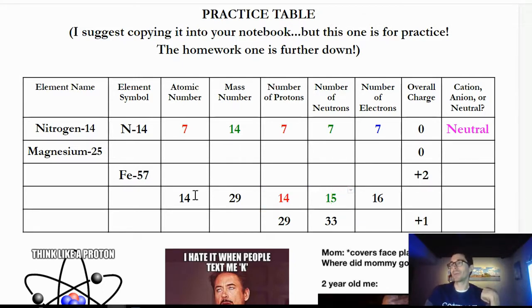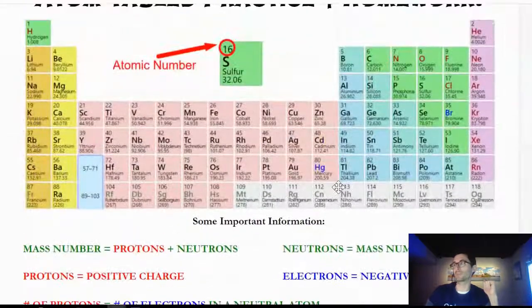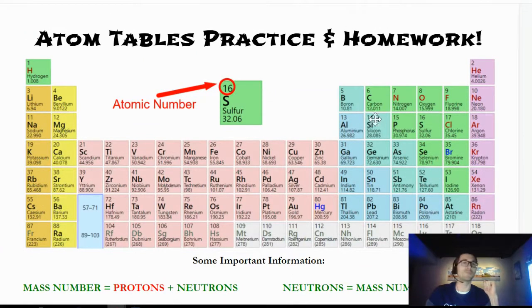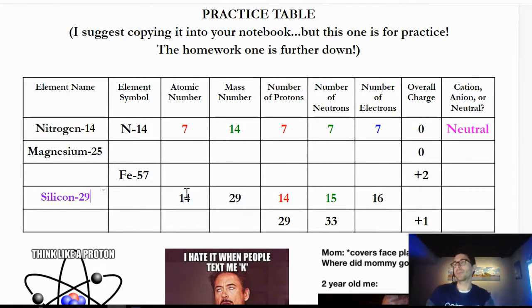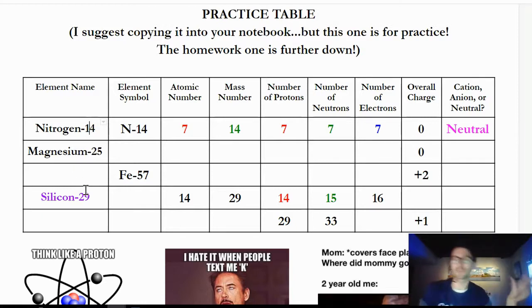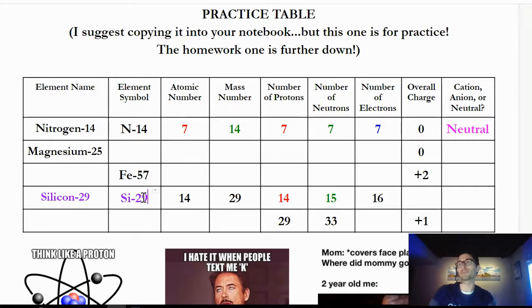Now I figure out what element has atomic number 14 — I go to the periodic table and look for element 14. There it is: silicon, number 14. I type in 'Silicon-29' because 29 is my mass number — you always put the mass number after the element name since it varies per atom. The symbol for silicon is Si, and I'll put 29 there.